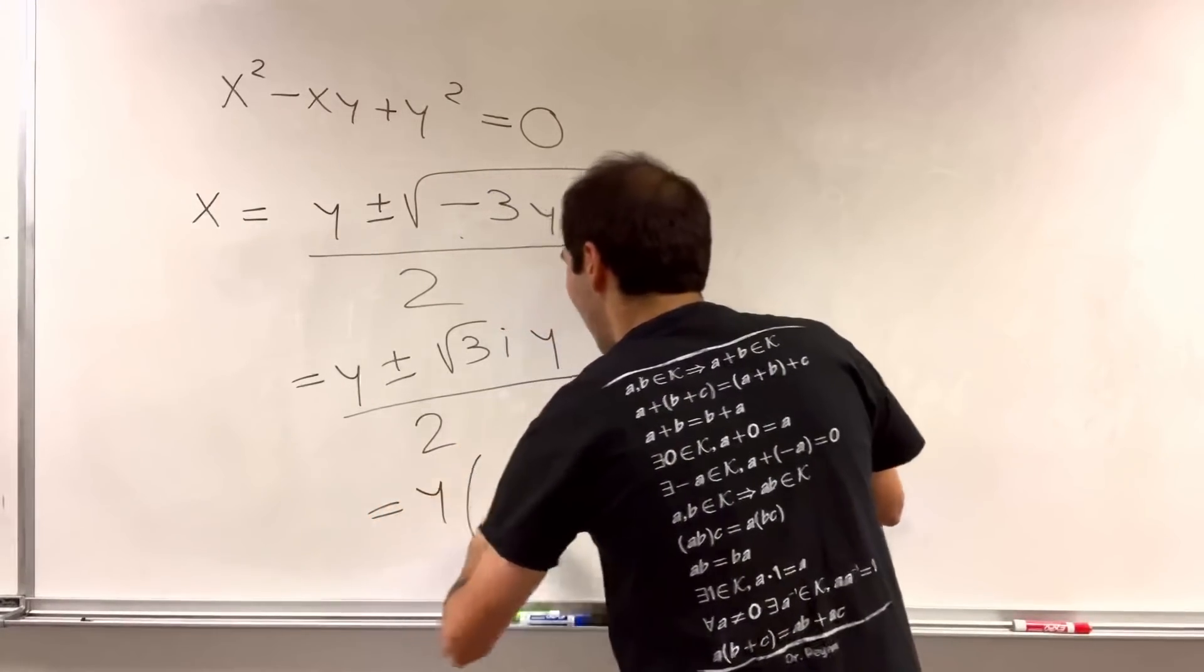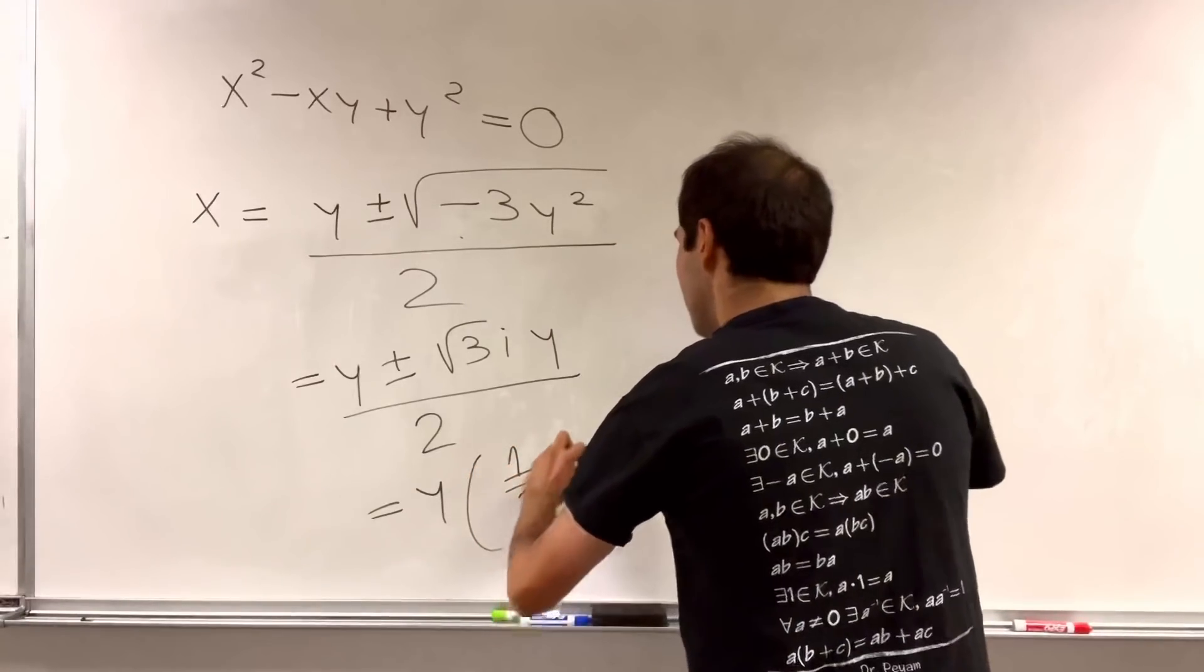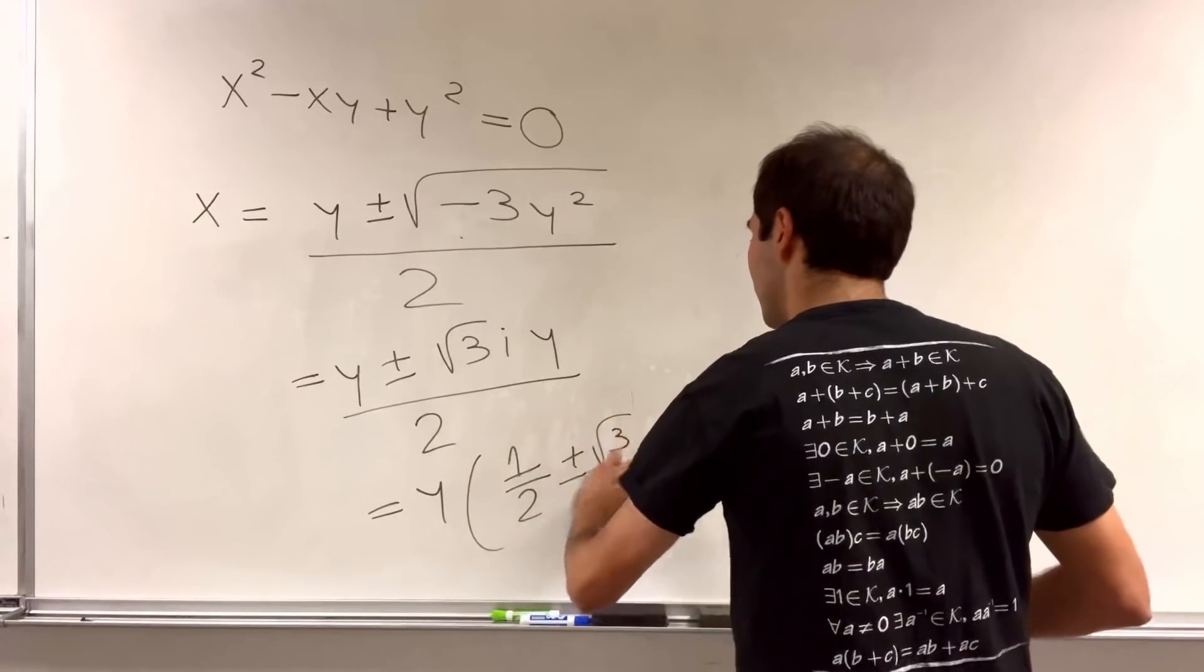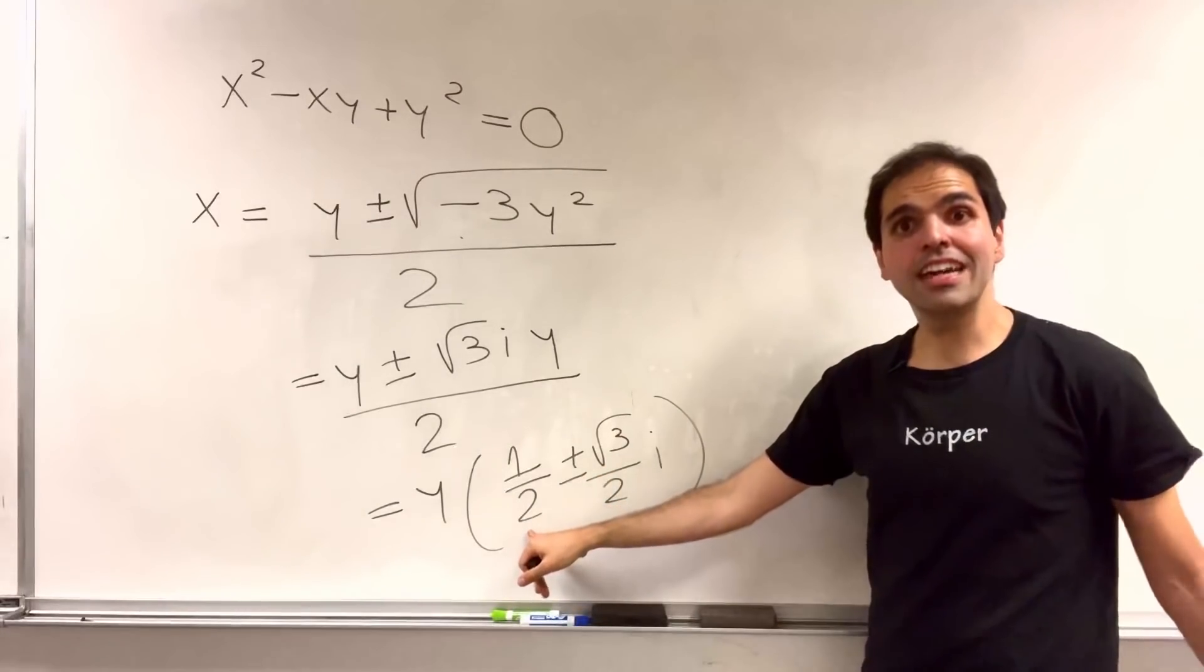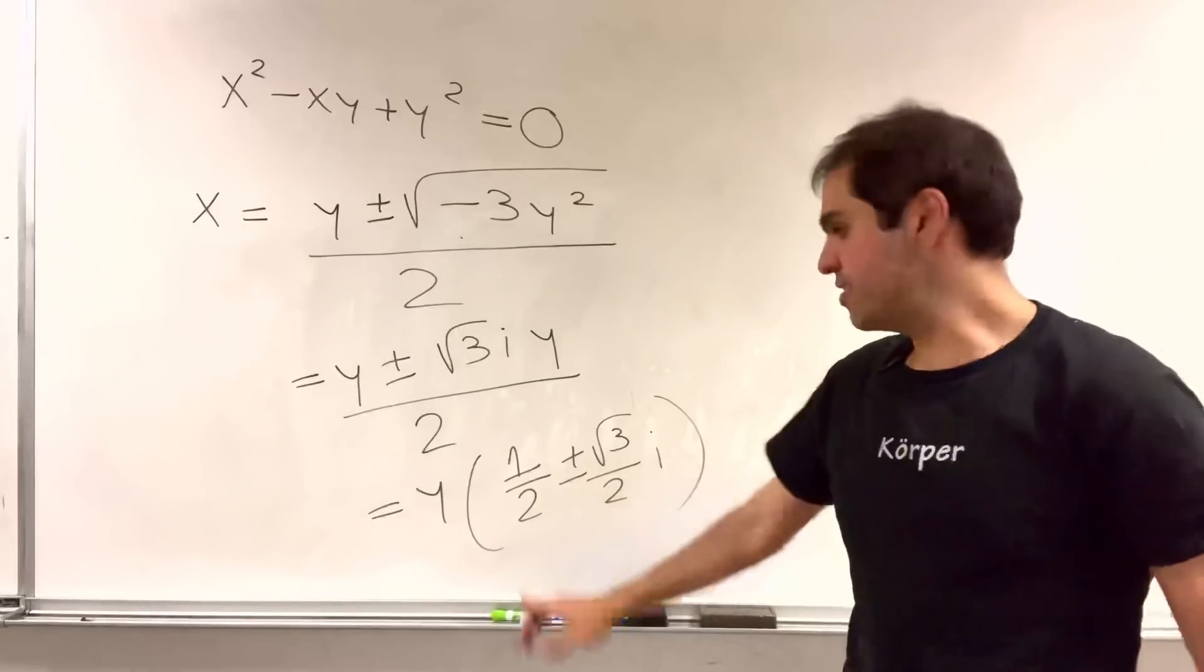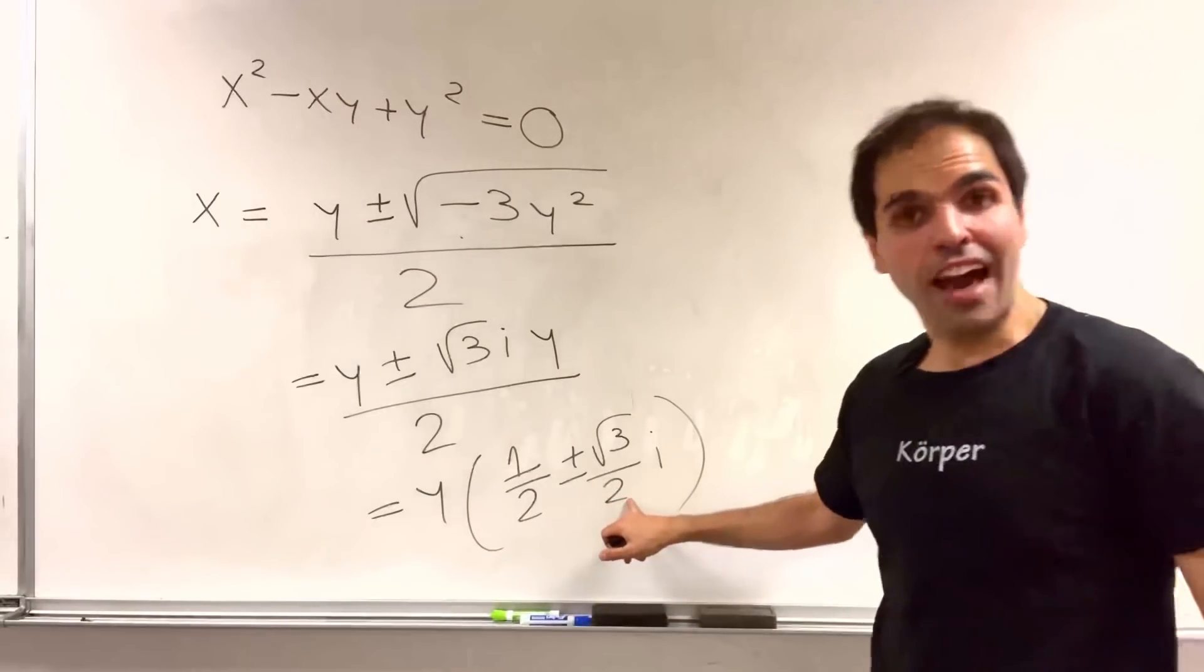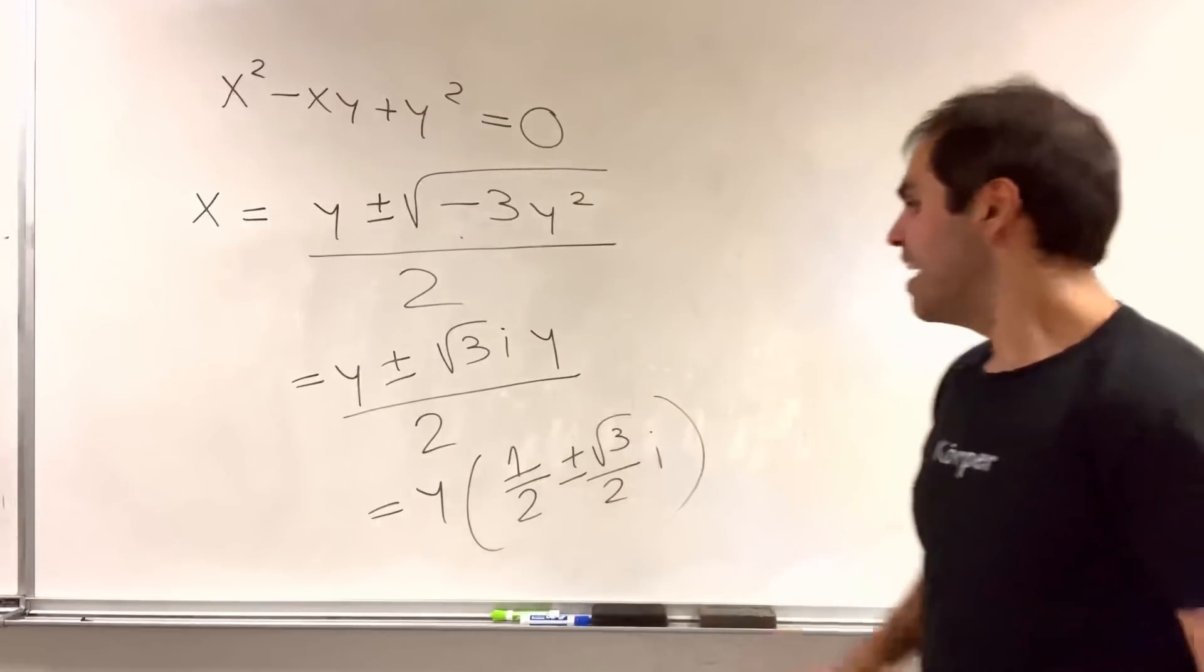So this is y times 1 half plus or minus square root of 3 over 2i. And you may recognize this as cosine of 60 degrees and sine of 60 degrees.